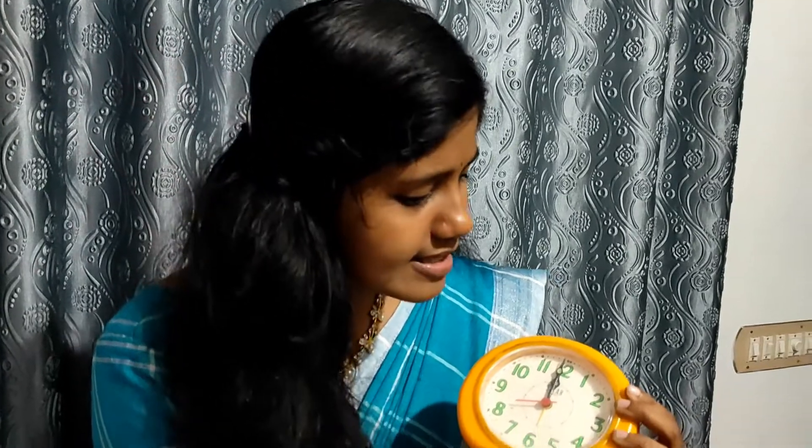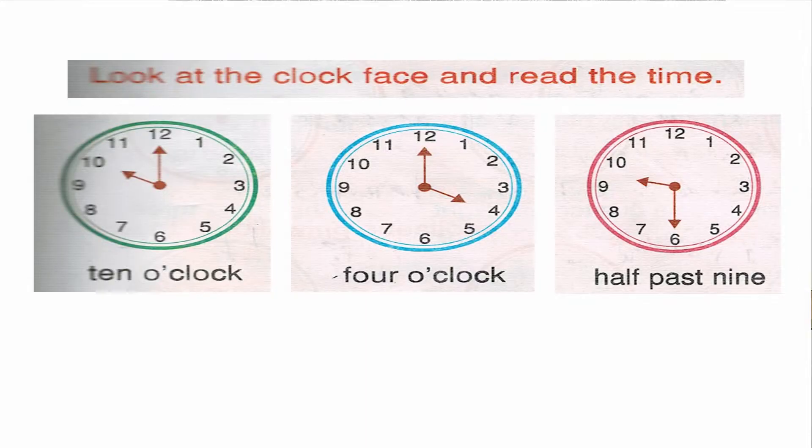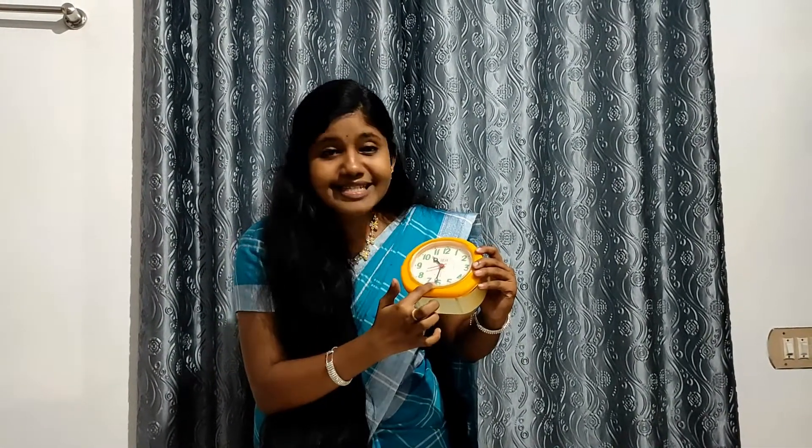This is 12 o'clock — the hour hand and minute hand are both on 12. From 12 to 1 there are 5 minutes. Now look at the clock — it is half past 10. The hour hand is on 10 and the minute hand is on 6. From 12 to 6: 12 to 1 is 5 minutes, 12 to 2 is 10, 12 to 3 is 15, 12 to 4 is 20, 12 to 5 is 25, and 12 to 6 is 30 minutes — that is half an hour. So this is half past 10, which is 10:30.